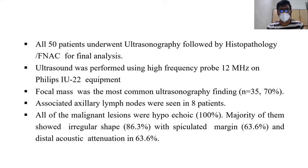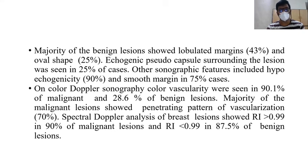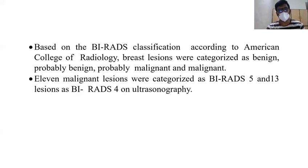All 50 patients underwent ultrasonography followed by histopathology or FNAC for final analysis. Ultrasound was performed using a high frequency probe at 12 MHz and Philips IU22 equipment. The most common ultrasonographic finding was axillary lymph nodes seen in eight patients. All malignant lesions were hypoechoic; majority showed irregular shape, spiculated margin, and distal acoustic attenuation. On color Doppler, color signals were seen in 90% of malignant and 28% of benign lesions, with majority of malignant lesions showing a penetrating pattern of vascularization. Spectral Doppler analysis showed RI greater than 0.99 in 90% of malignant and RI less than 0.99 in 87.5% of benign lesions. Based on BIRADS classification per the American College of Radiology, lesions are characterized as benign, probably malignant, and malignant. Eleven malignant lesions were characterized as BIRADS 5 and 13 lesions as BIRADS 4.